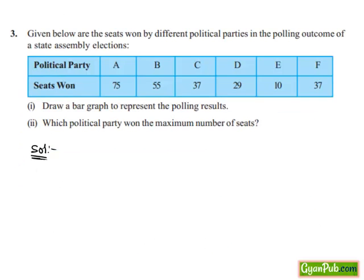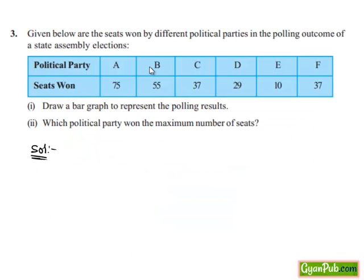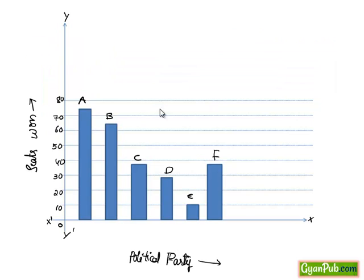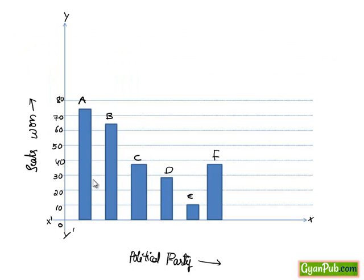And similarly if we plot the bar graph for A, B, C, D, E and F, we get the graph as follows where for B it is 55 and C it is 37 which is in between 30 and 40.